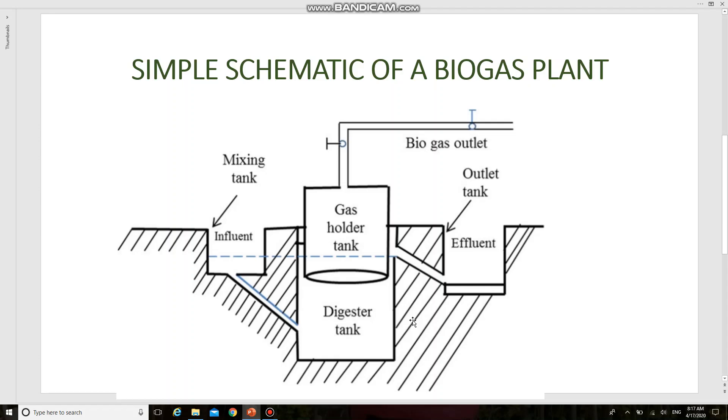Next, let us see the properties of biogas used as a fuel in IC engines. Biogas contains 50% to 70% of CH4, 5% to 10% of H2, and up to 30% to 40% of CO2.